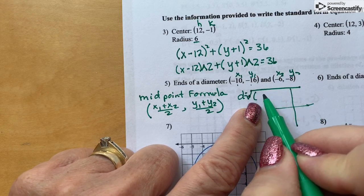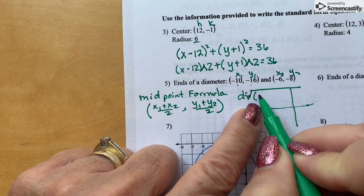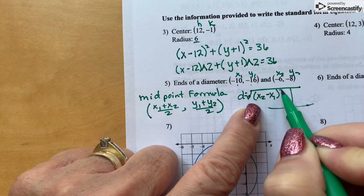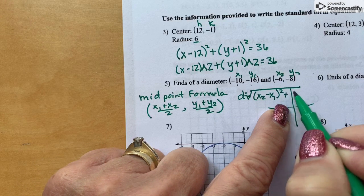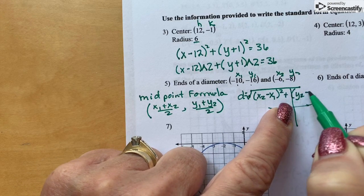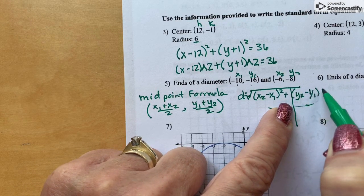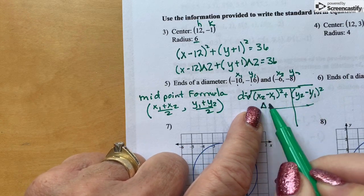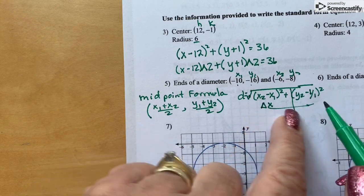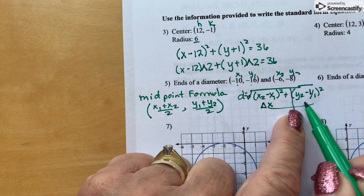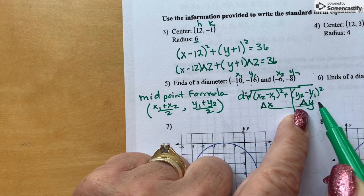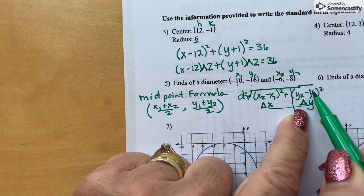So that is going to be x2 minus x1 squared plus y2 minus y1 squared. Remember, x2 minus x1 is the change in the x value between two points. And the y is the change in y value or vertical change between the two points.